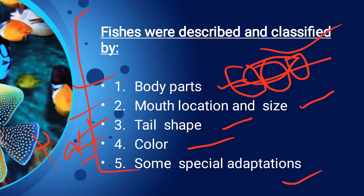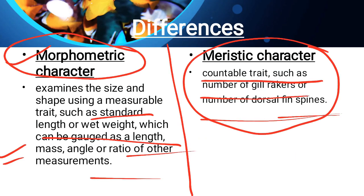The lateral line is also part of this classification. In the next class, Part 4, we will see the fish body parts we have named and learn what functions those body parts perform. We will also cover types of scales in fish and mouth types. That was all for today — thank you so much for watching. Please like, subscribe, and share my video. Thank you so much.